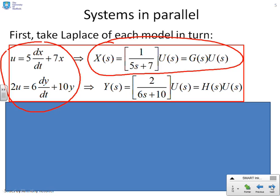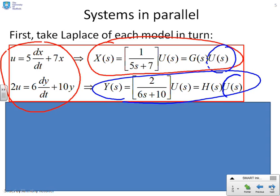The second equation, 2U equals 6 dy/dt plus 10y, gets represented as Y equals HU, where H is 2 over 6s plus 10. The key point is both of these use the signal U. And we want to ask, how do we write this in a block diagram?